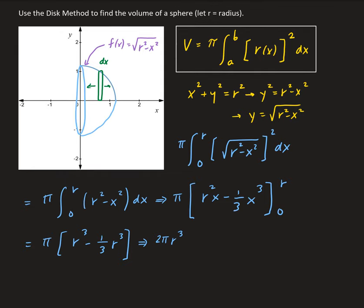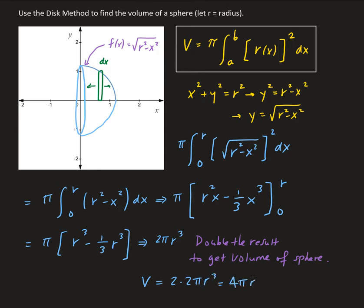We're going to double the result to get the volume of the full sphere. Therefore, we have the volume equal to 2 times two-thirds pi r cubed, which gives us four-thirds pi r cubed.